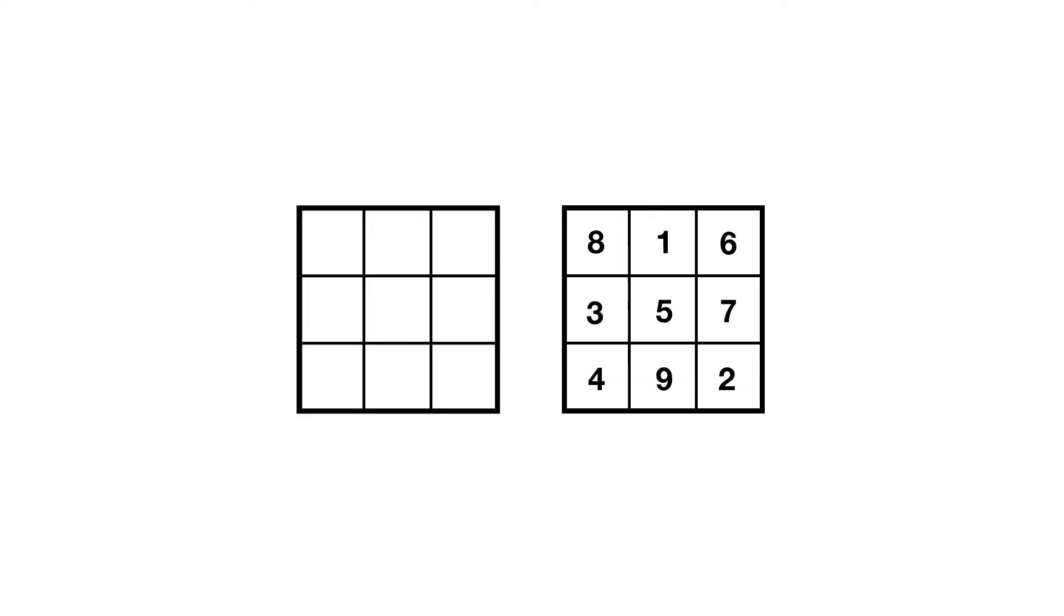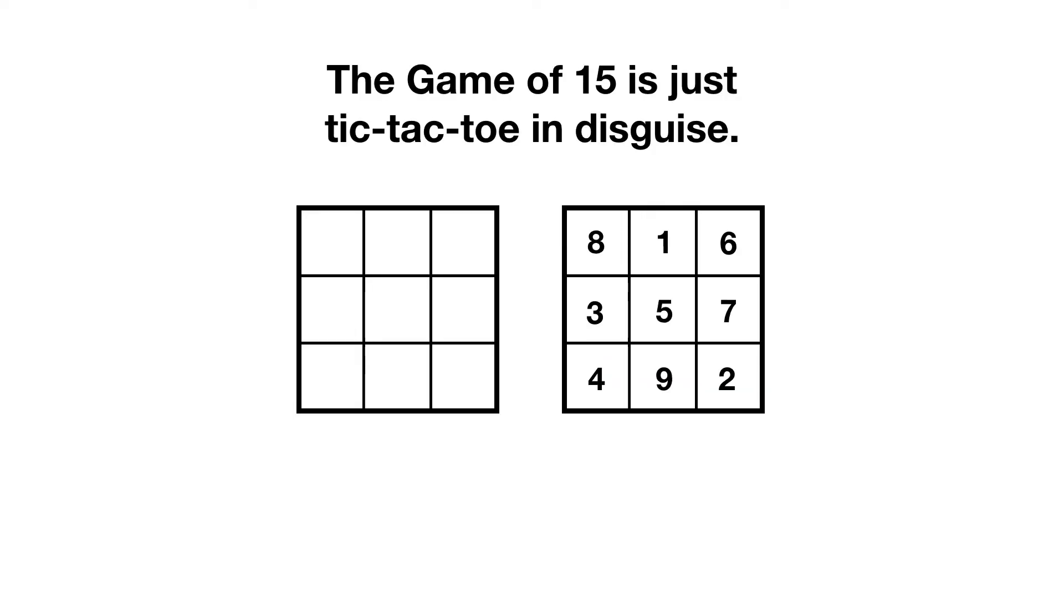To come up with a winning strategy for the Game of Fifteen, we're going to make use of our tic-tac-toe playing Kung Fu. There are only eight ways to get a total of 15 using exactly three numbers, 1 through 9. Those eight combinations match precisely with the entries of the rows, columns, and the long diagonals of a 3 by 3 magic square, which we learned to construct in a recent video.